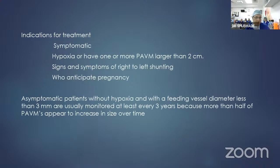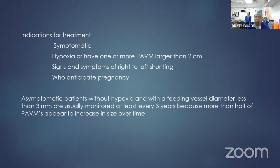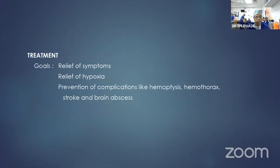Treatment is indicated when the patient is symptomatic, has hypoxia, or has one or more PAVM larger than two centimeters. Asymptomatic patients without hypoxia and with a feeding artery diameter less than three mm are usually monitored at least every three years, as more than half of PAVMs increase in size over time. The goal of treatment is relief of symptoms, relief of hypoxia, and prevention of complications like hemoptysis, hemothorax, stroke, and brain abscess.